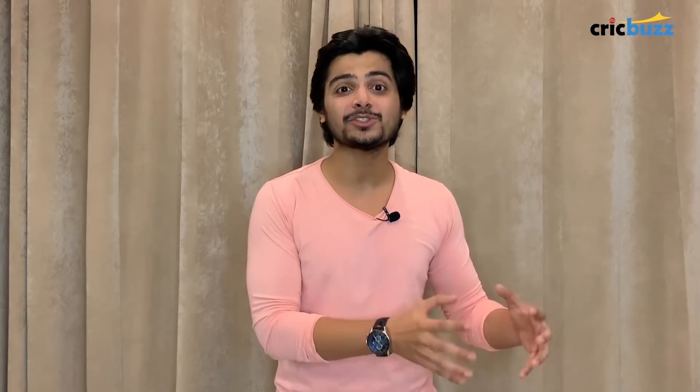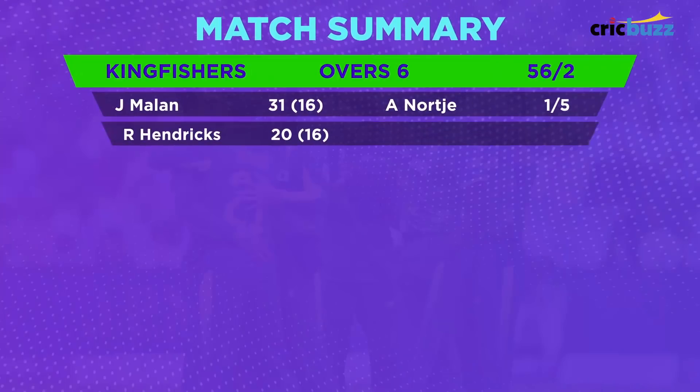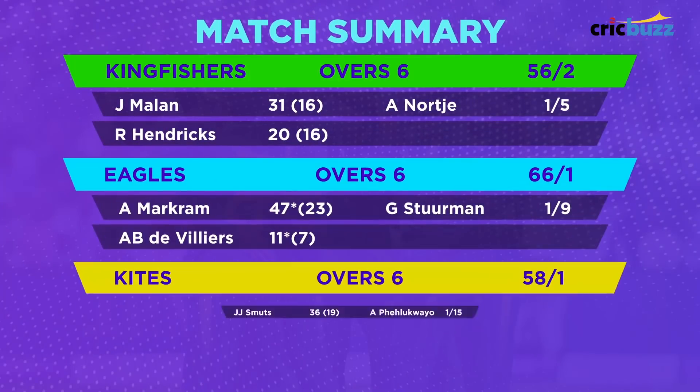At the end of the first phase, with each team having batted 6 overs, the standings were: AB De Villiers' Eagles first, Temba Bavuma's Kites second, and Reza Hendricks' Kingfishers third.